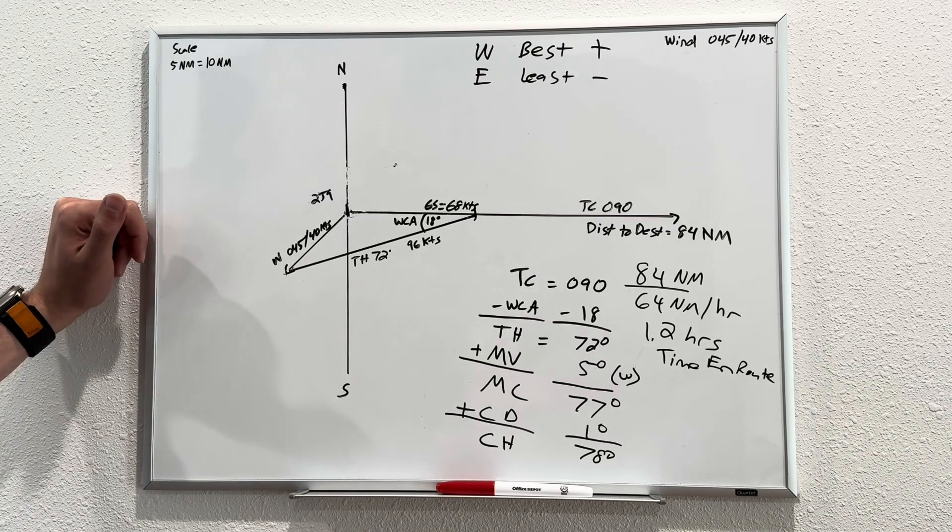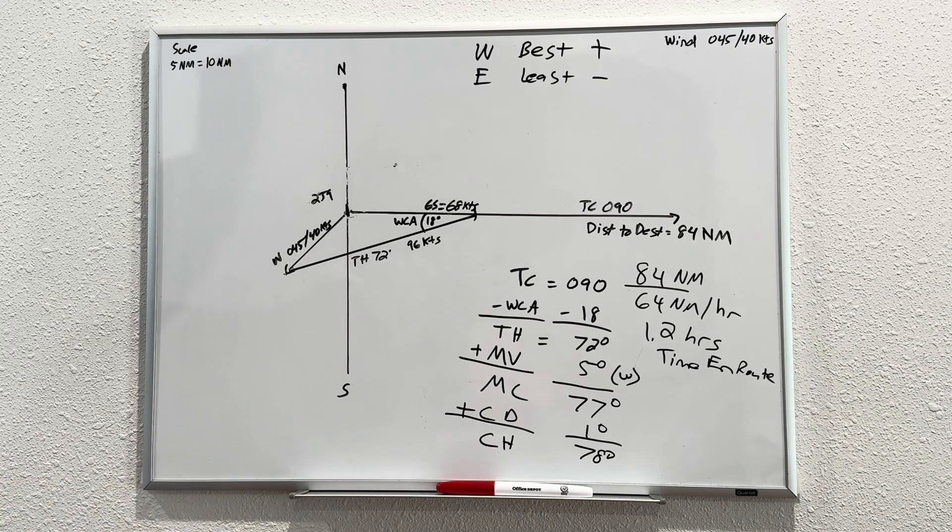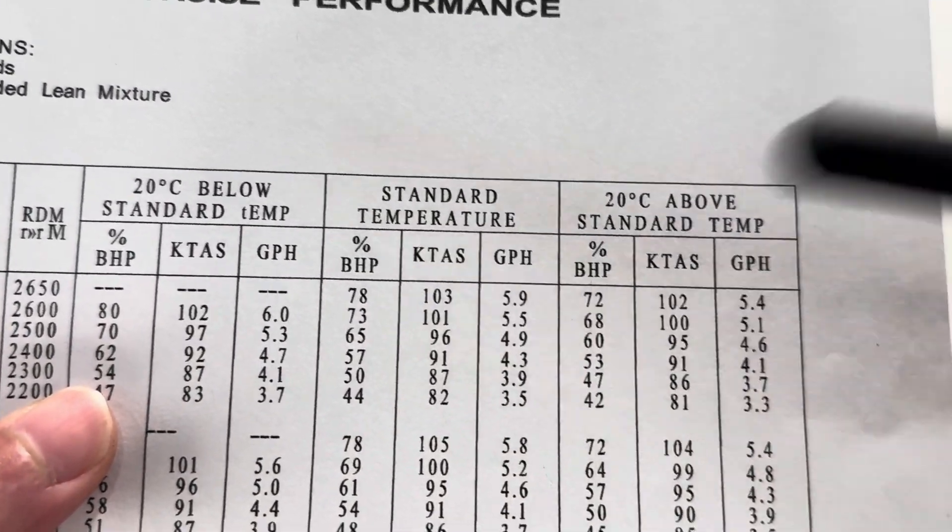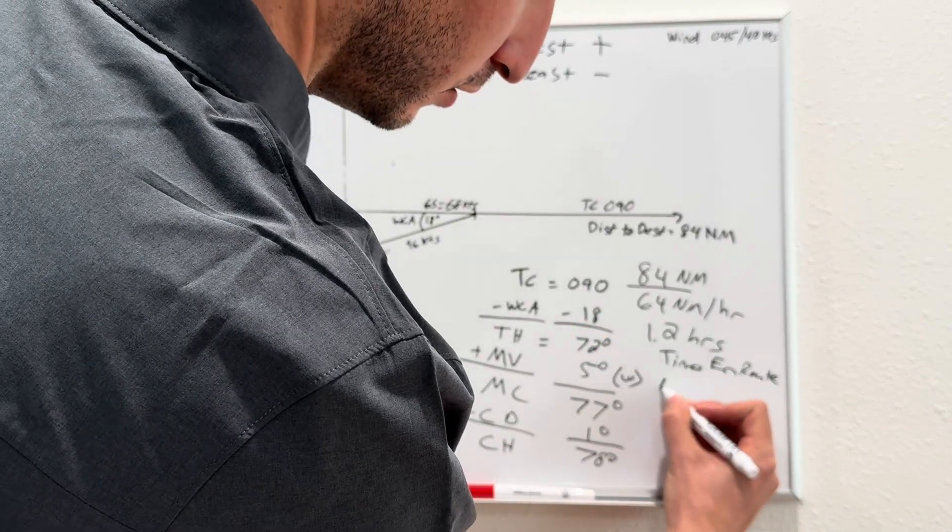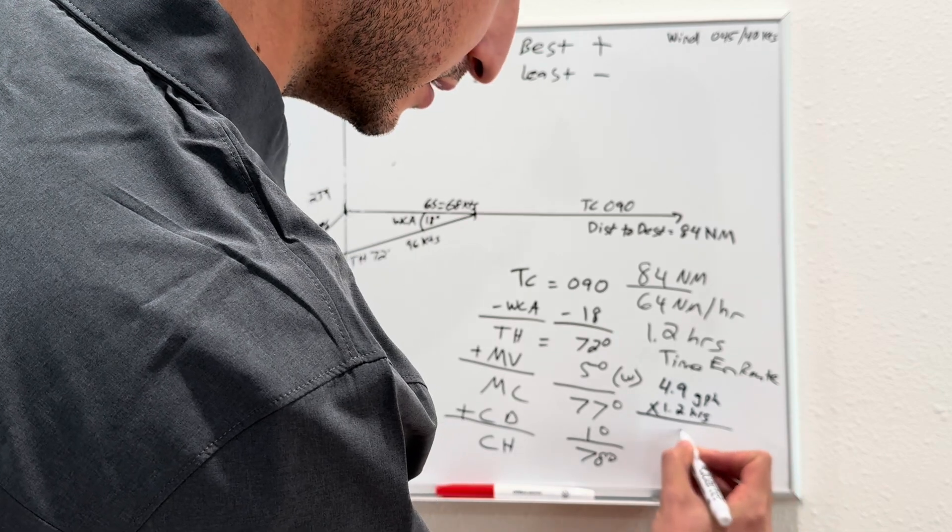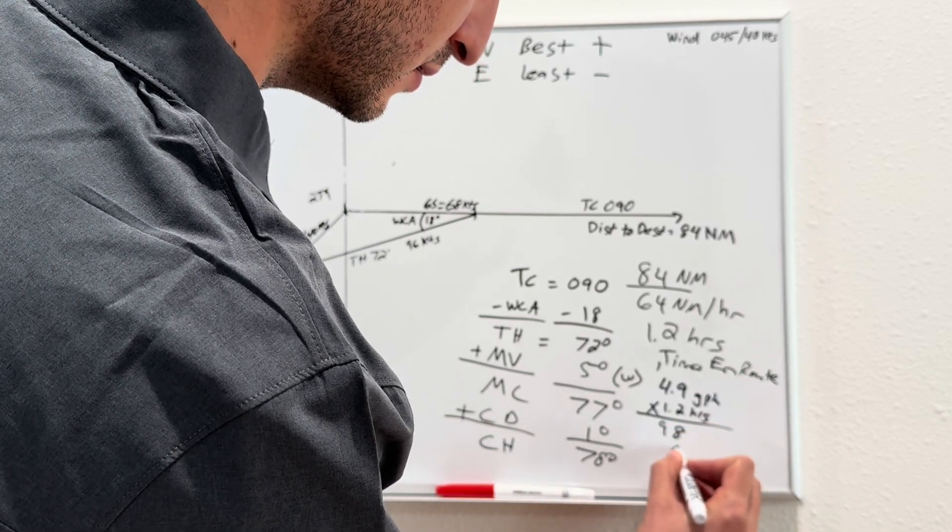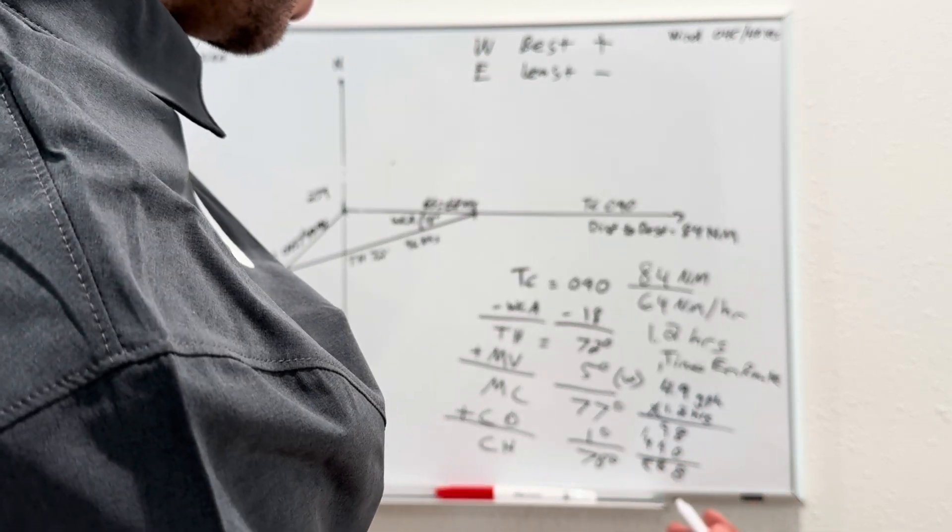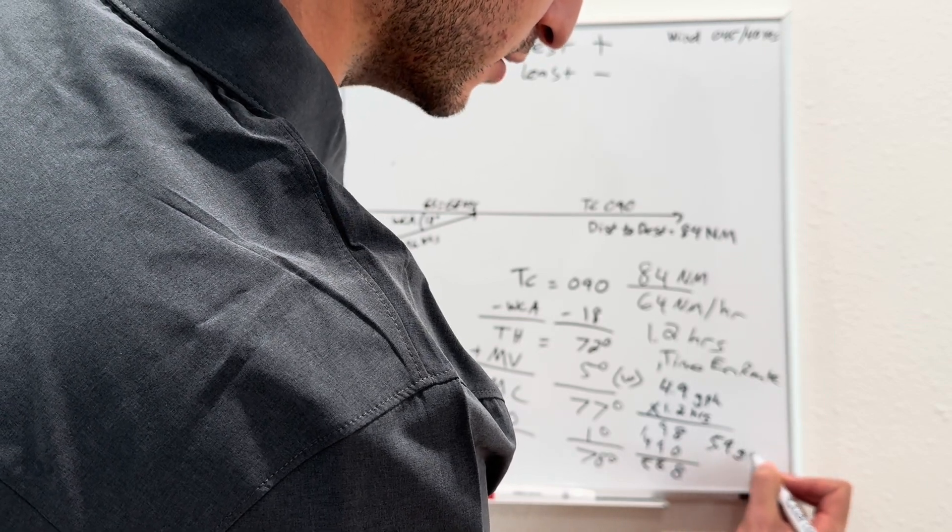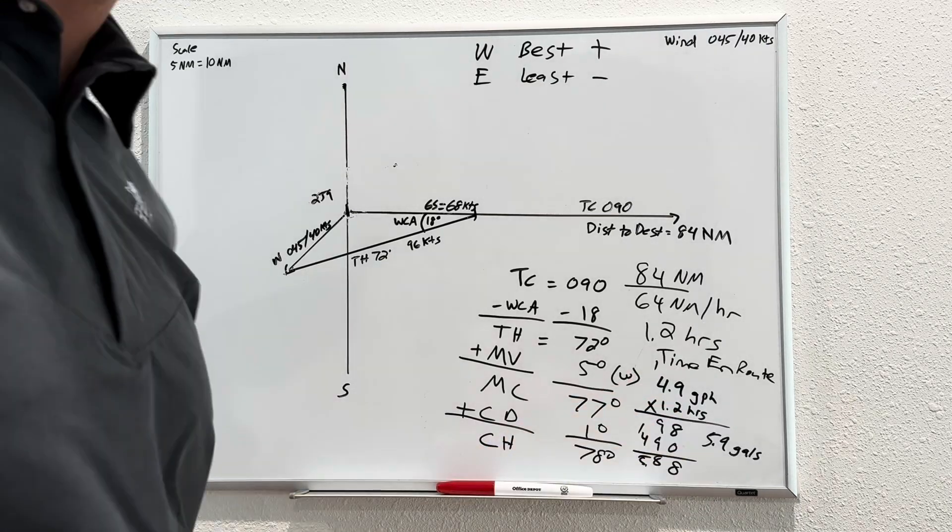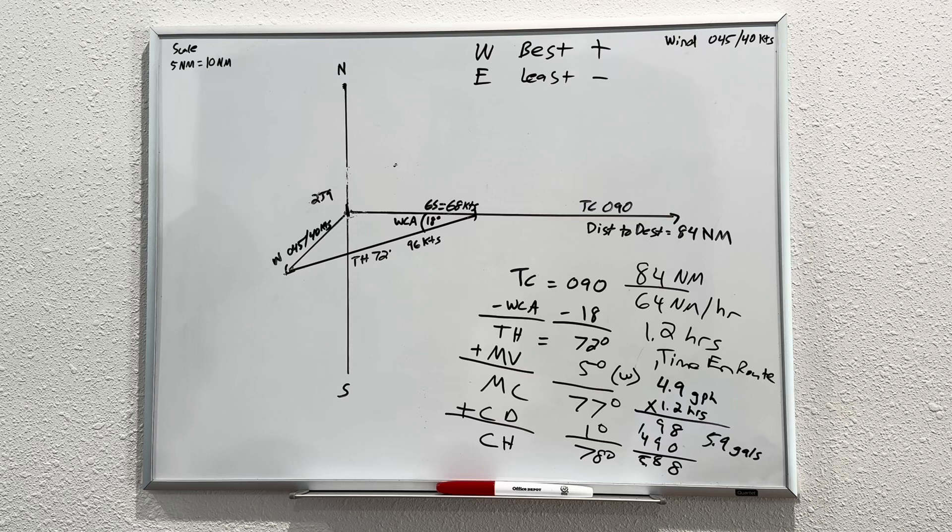If we wanted to figure out our fuel burn, 1.2 hours, we would go to our POH, and if you recall, our cruise performance chart told us that we burned 4.9 gallons per hour at 2,500 RPMs. So our fuel burn is 4.9 gallons per hour times 1.2 hours. In theory, it should give us 5.8. So we should burn roughly 5.9 gallons total to get to Baker's Mill. We've derived some really important information. We're going to be in the air for 1.2 hours, and we're going to burn roughly 5.9 gallons of fuel.